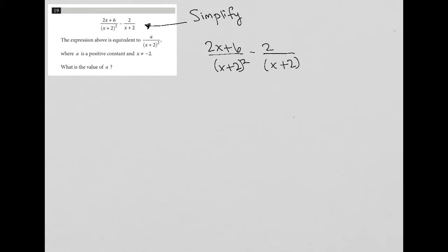It's not in the original question, but I can see that I can simplify that because the lowest common denominator, which is what we will need to find whenever we're adding or subtracting fractions, is x plus 2 squared, which really just means I need to multiply the numerator and denominator of the fraction on the right by x plus 2.